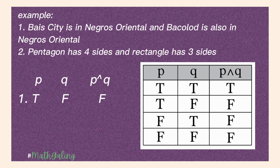Second example: 'Pentagon has four sides.' We all know that a pentagon has five sides, so that is a false proposition. And 'rectangle has three sides' — that is also a false proposition because a rectangle has four sides. So the truth value will be, of course, false.